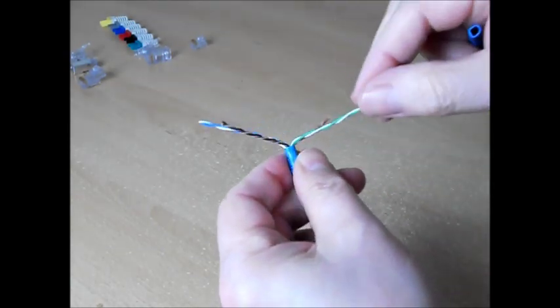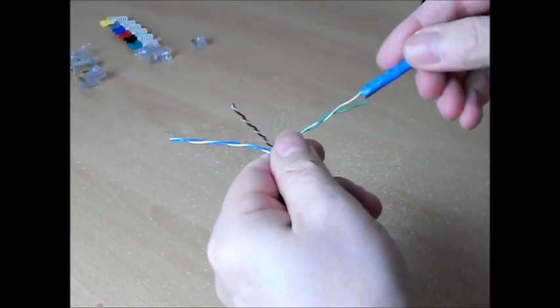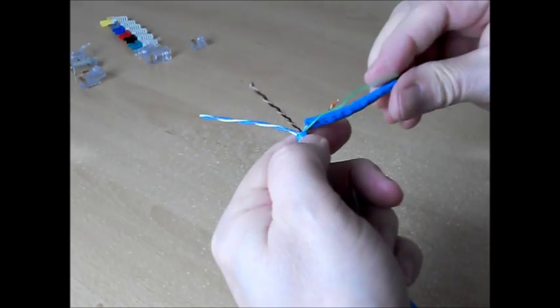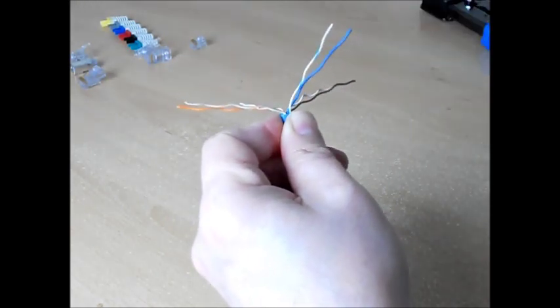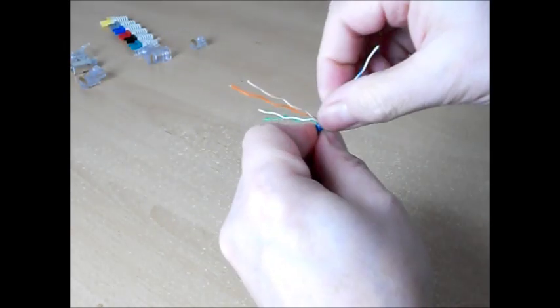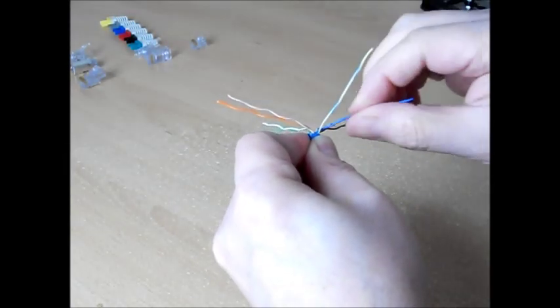The cable jacket that I've just cut off can be used as a handy separator. Once all these cores are separated, I can start smoothing out the twists in the cores.